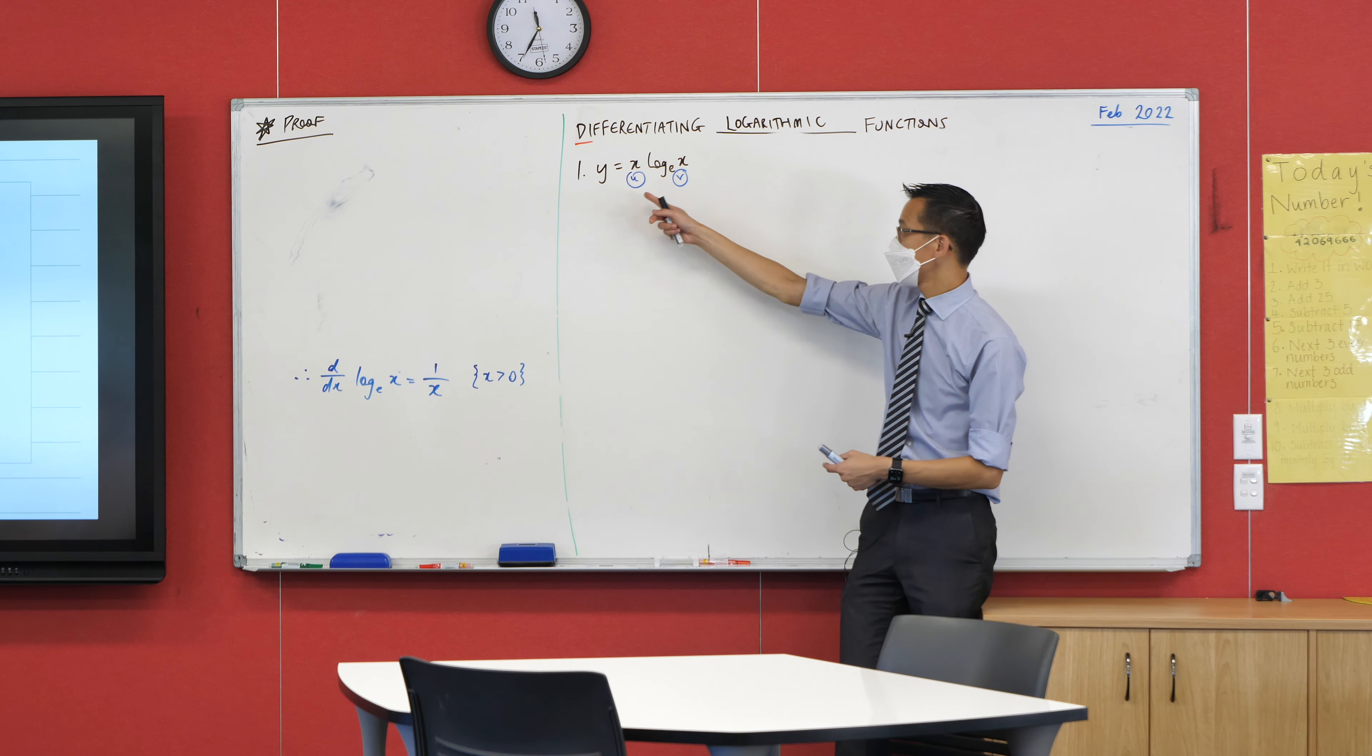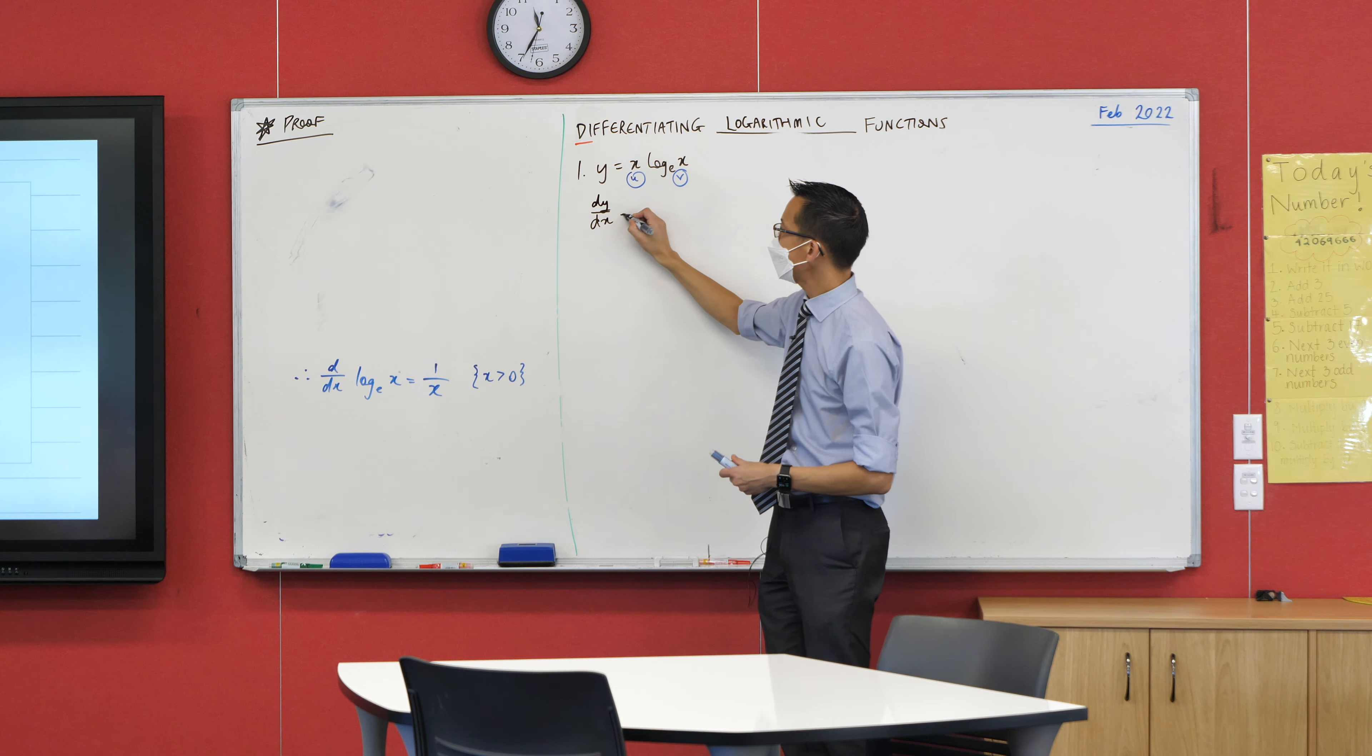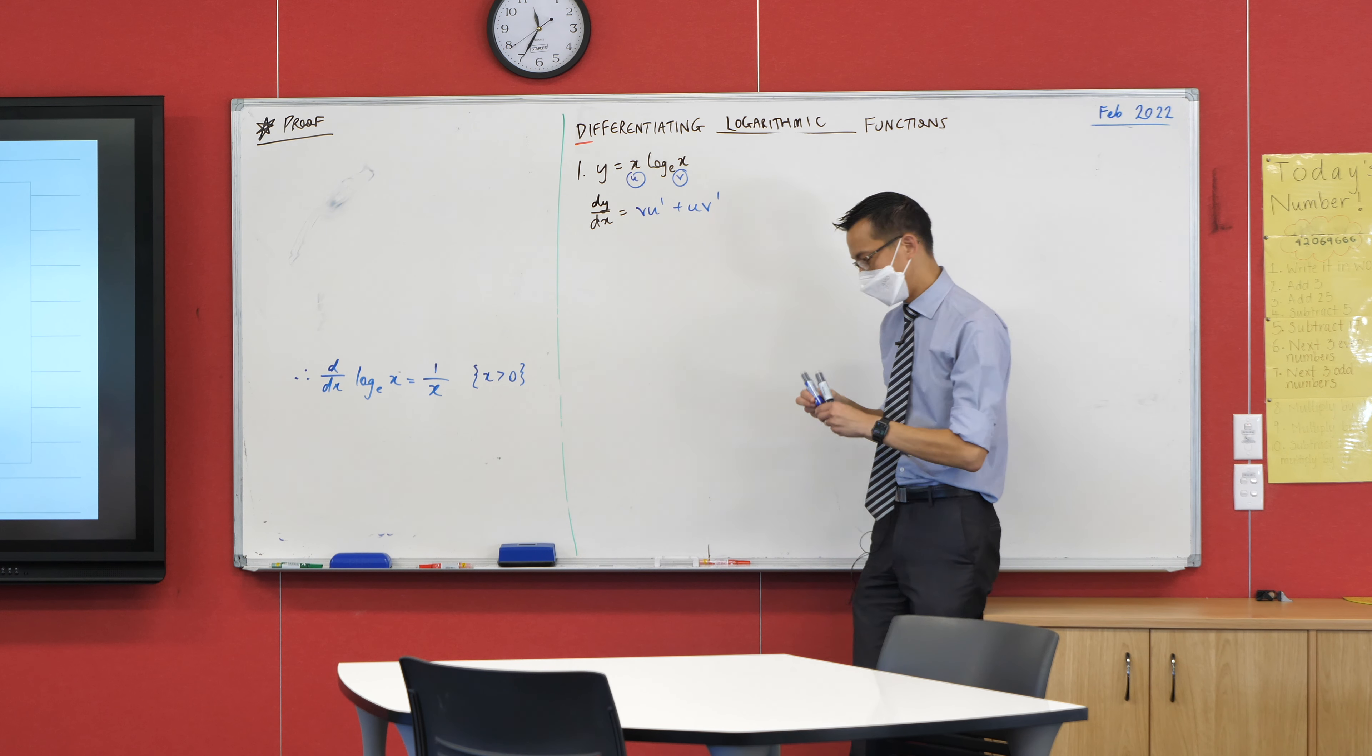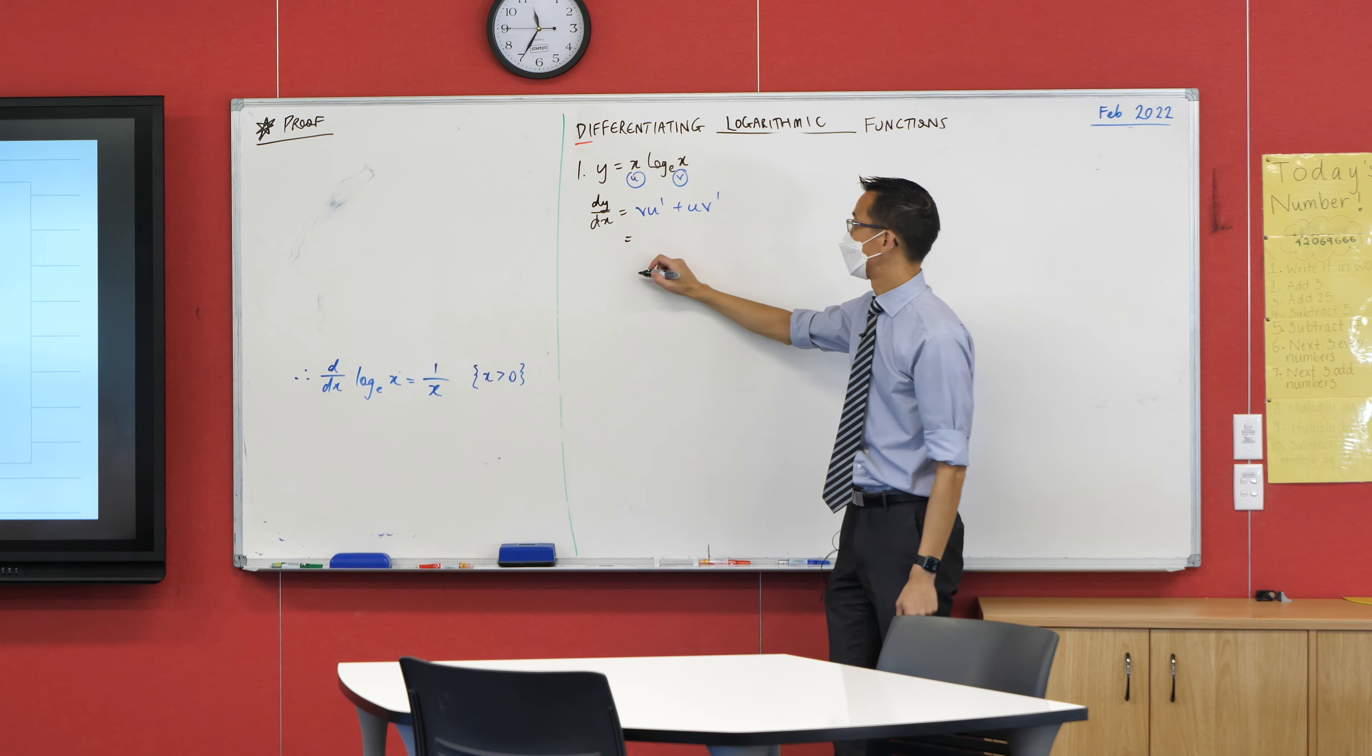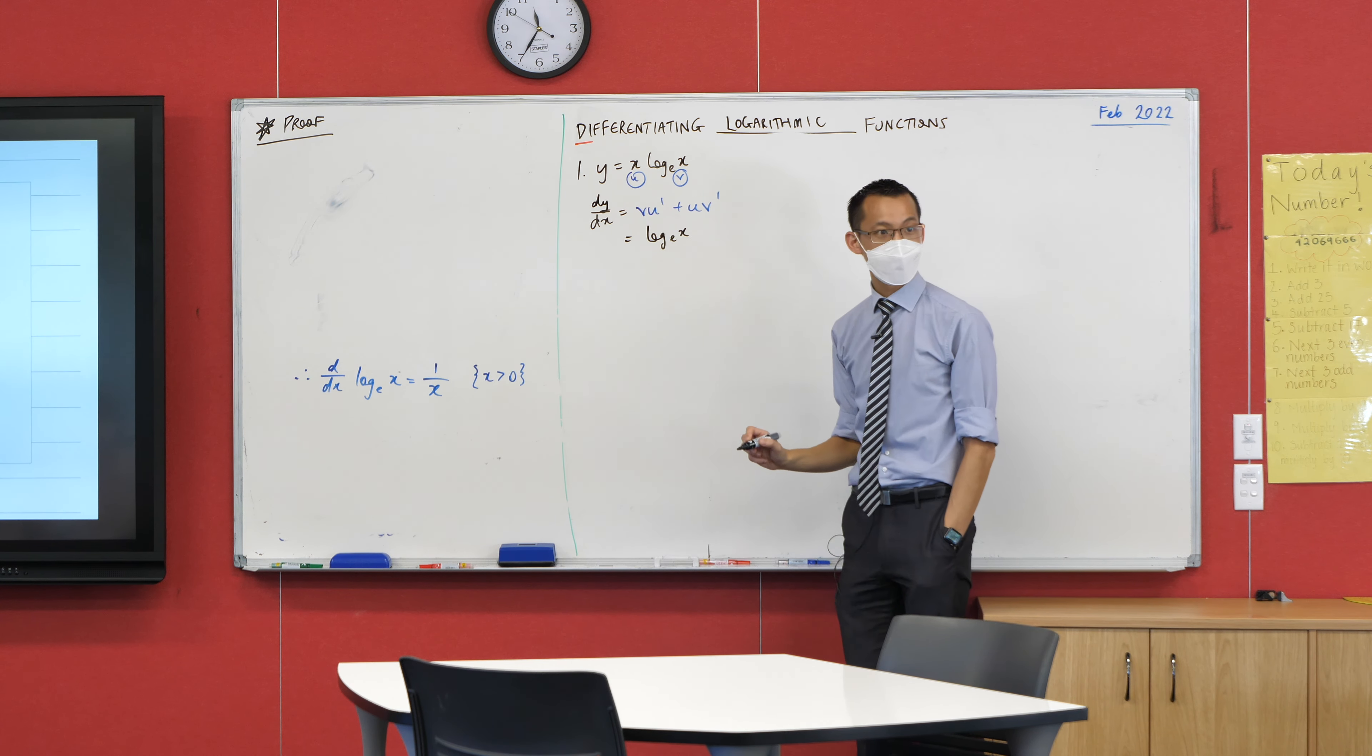So what I'm going to do is, having just labelled them, I reckon we should be able to work out our V U dash plus U V dash, without too much trouble. And again, as you've seen, because we're adding it's a product, the order doesn't matter. In this case, V is log of X, like so.